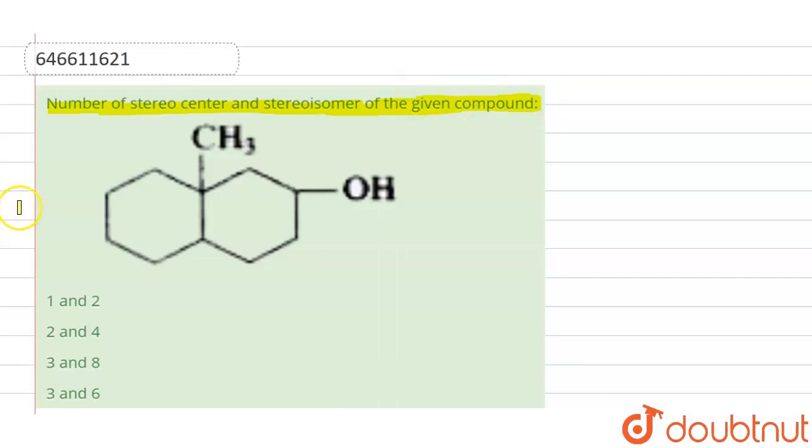Stereocenters are our chiral carbons, or we can say the asymmetric centers. The chiral carbon is one where we have four different elements or groups attached to it.